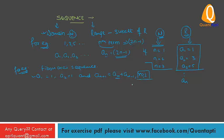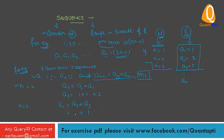The condition is N greater than or equal to 2, so you cannot put N equal to 1. If you put N equal to 2 in A(N+1) = AN + A(N-1), you get A3 = A2 + A1 = 1 + 1 = 2. Then A4 = A3 + A2 = 2 + 1 = 3.